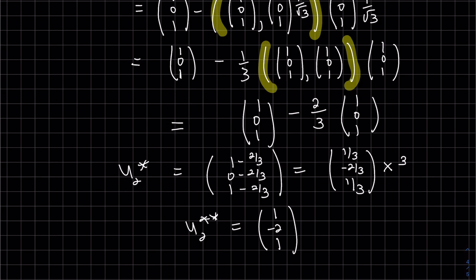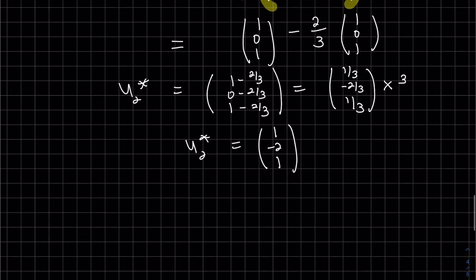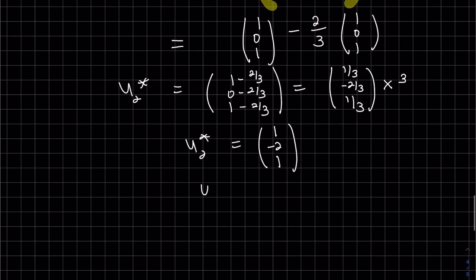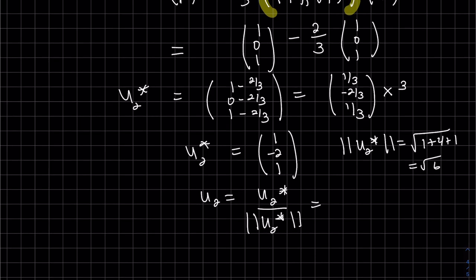Then I can normalize this vector instead of the one with fractions. So much easier. So now normalize. And again, I'll just call that u2* for easiness, even though it's a little bit different. So normalize it: u2 = u2*/||u2*|| = (1,-2,1)/√6.